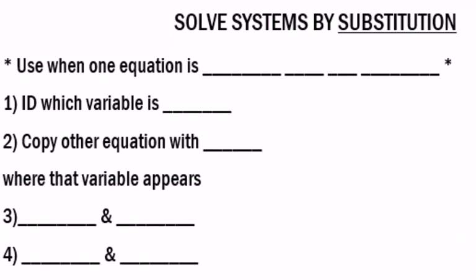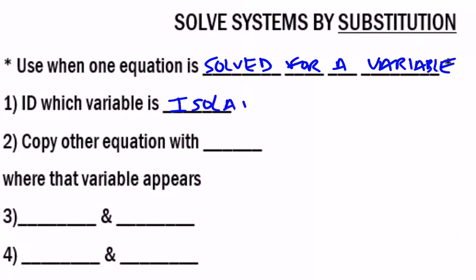So we want to use when one equation is solved for a variable. You want to identify which variable is isolated, that means by itself. We're going to copy the other equation with parentheses, a nice big parentheses, where that variable appears.